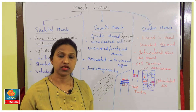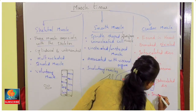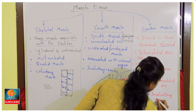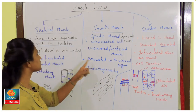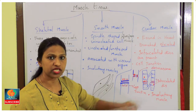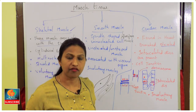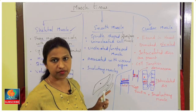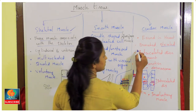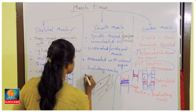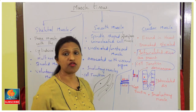The movement of cardiac muscle is not under our control, so it is involuntary. Cardiac muscle is unique in combining features of both skeletal muscle (striation) and smooth muscle (involuntary action), but it is found exclusively in the heart.